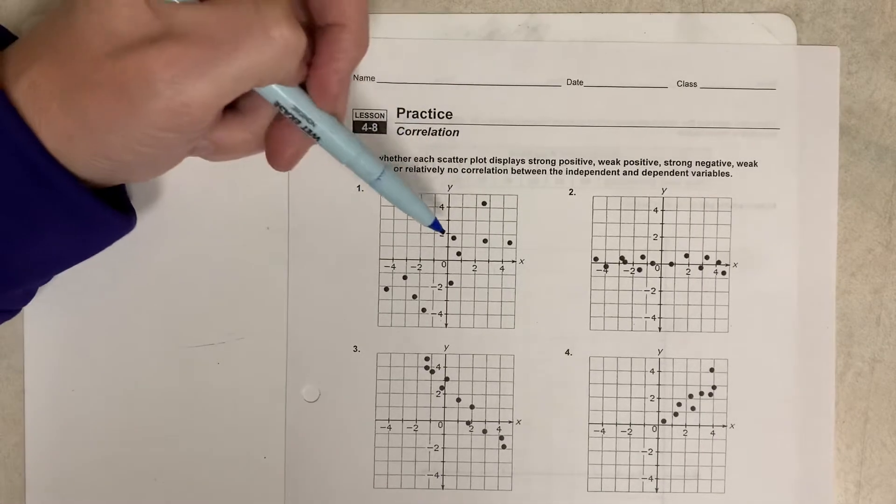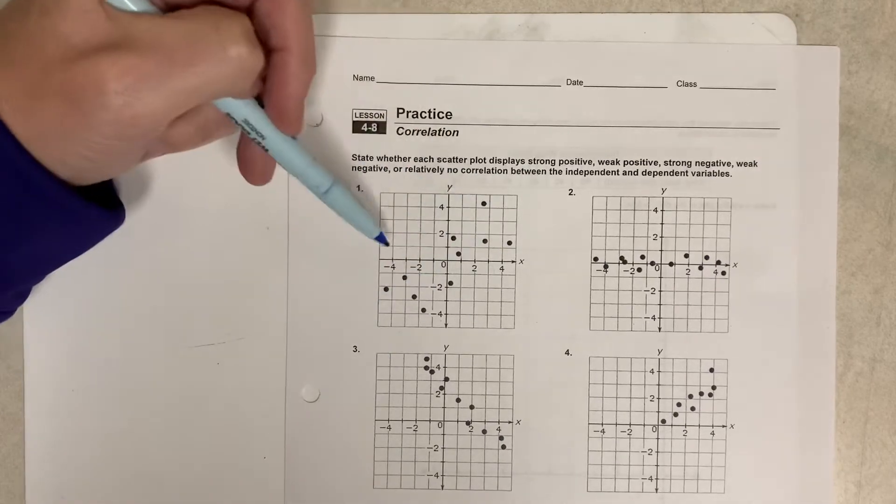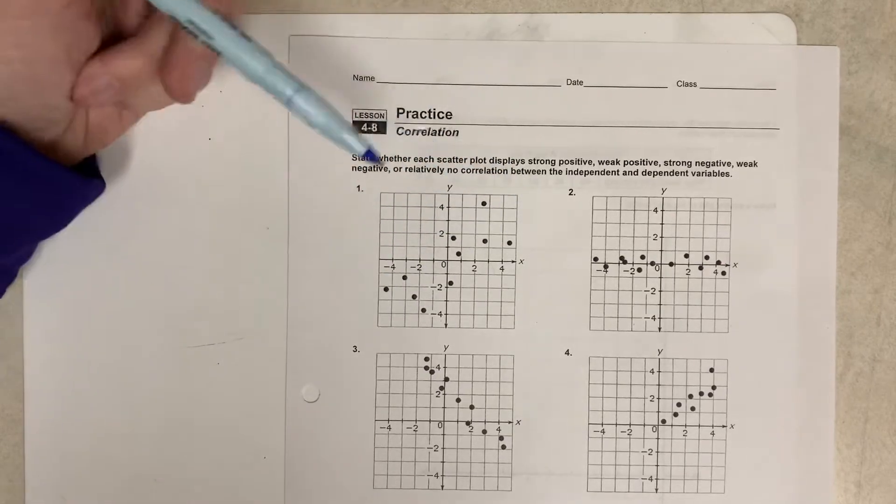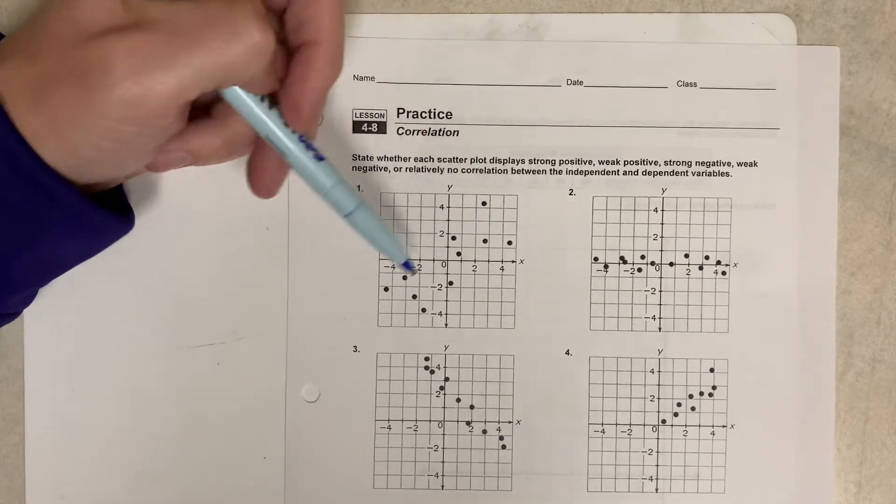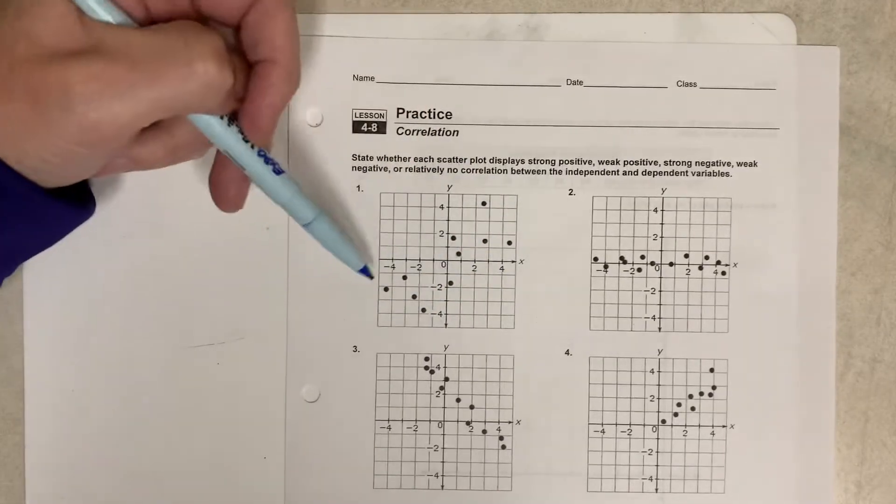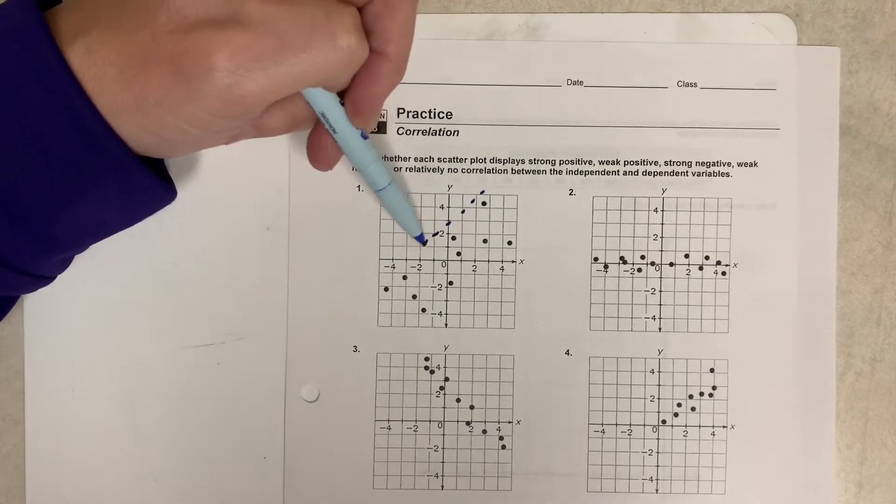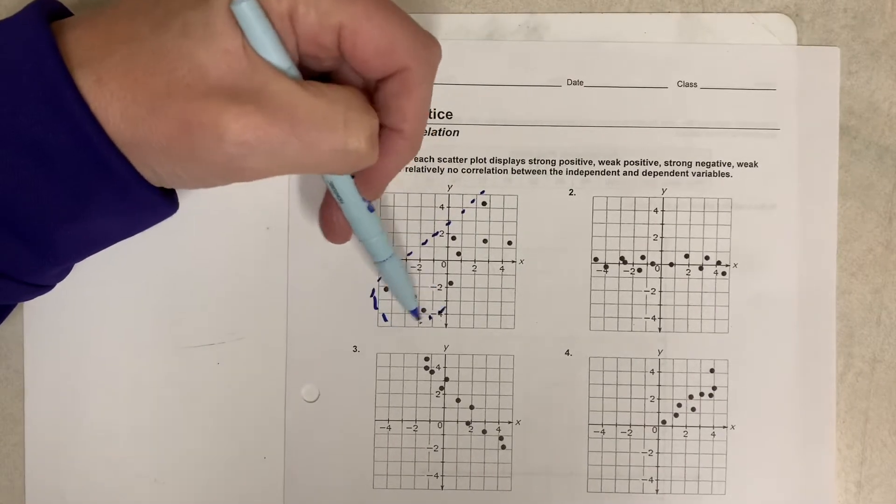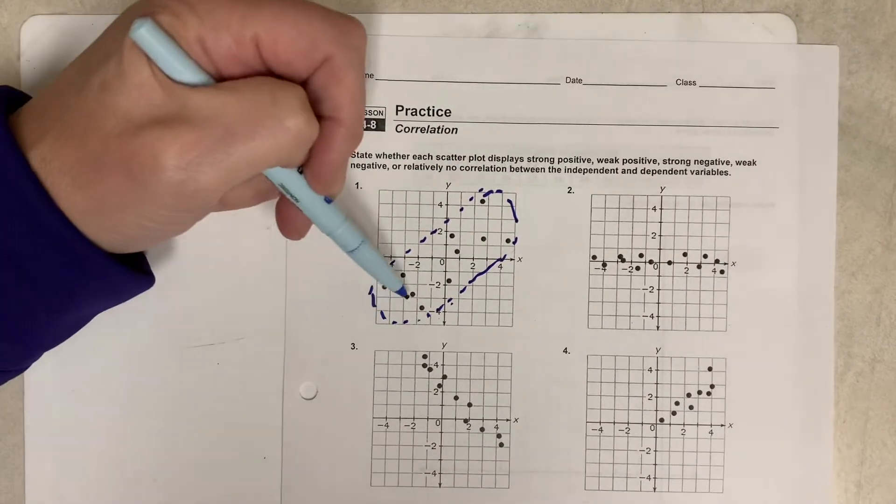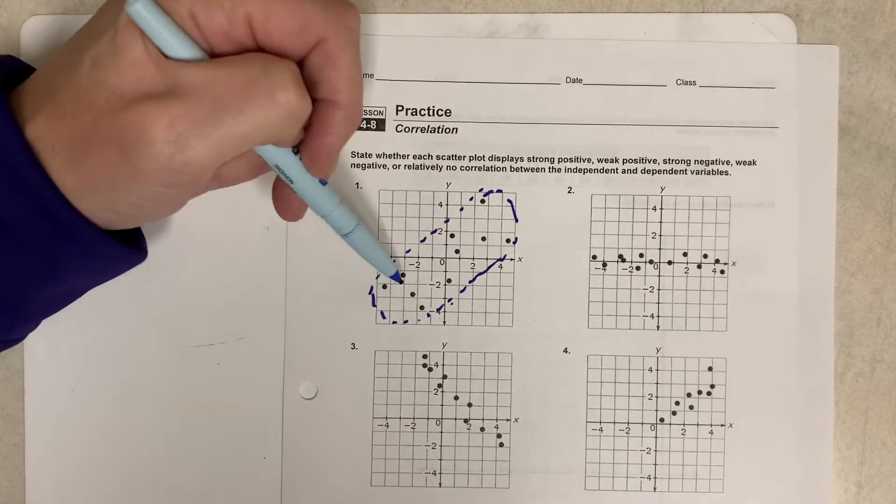Number one, we have all of these dots that have already been plotted, and we call this a scatter plot. On the scatter plot we have these dots, and they're either going to go kind of up or down or maybe not anywhere close to each other. These, if you look at it, they kind of all look like this, and if I kind of circle them in, they kind of all look like they have this upward trend from negative to positive or from left to right.